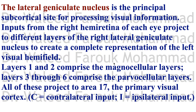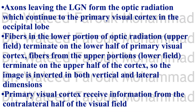After processing, all these fibers project to the primary visual cortex — areas 17, 18, and 19 — through the optic radiation. Fibers from the lower portion of the optic radiation (from the upper visual field) terminate on the lower banks of the primary visual cortex.